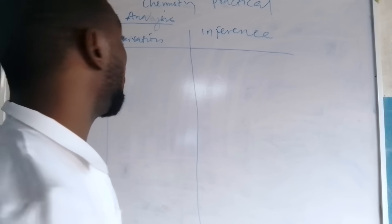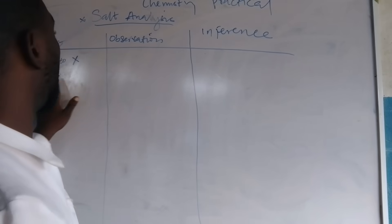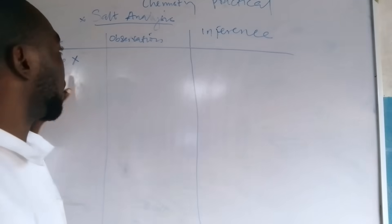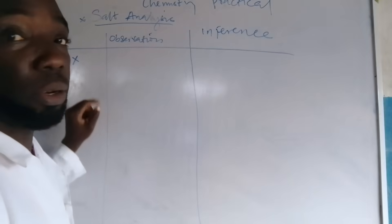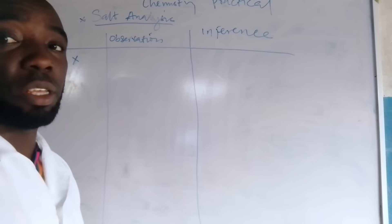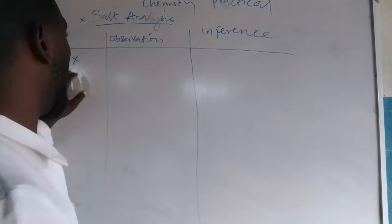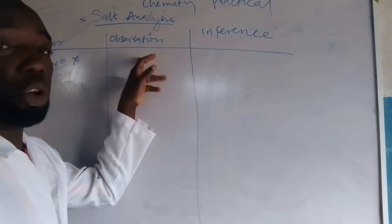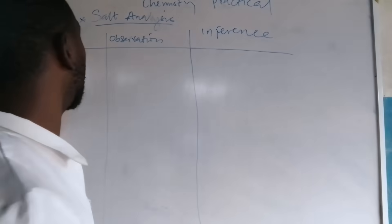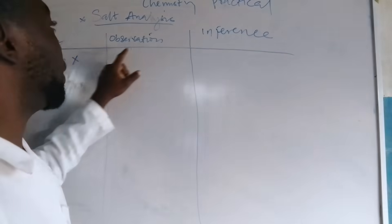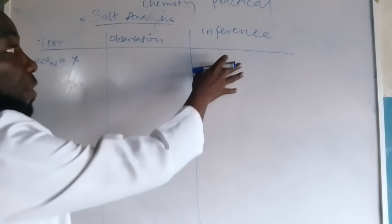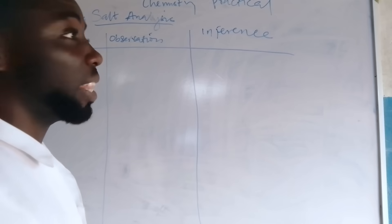Follow the instructions and I promise you that you will have excellent results by the time your result comes out. So let us proceed. We are going to be adding sodium hydroxide to X. The test is: add sodium hydroxide to X, then take the observation and inference.